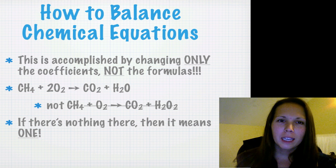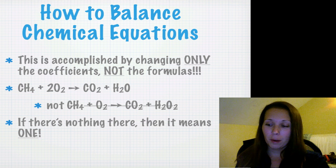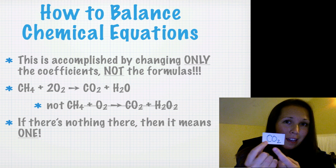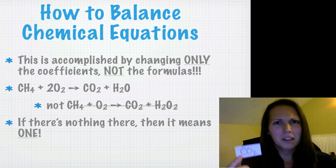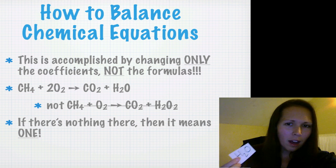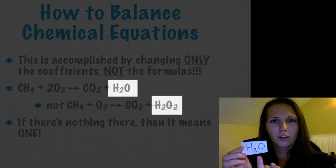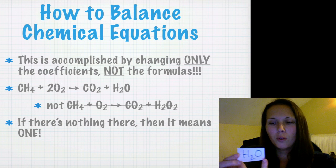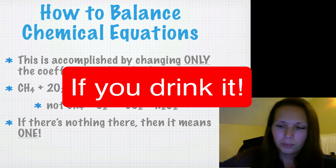Balancing chemical equations is accomplished by changing only the coefficients, not the formulas. So if I were to take carbon dioxide and say I want three oxygens and just add a three to make CO3 - no, you can't, because that makes it carbonate. You can't change the formula. If you have two oxygens on one side and water on the other, and you want to make the oxygens equal, you can't just add two down inside the formula - that would make hydrogen peroxide, H2O2, which will kill you, unlike water.